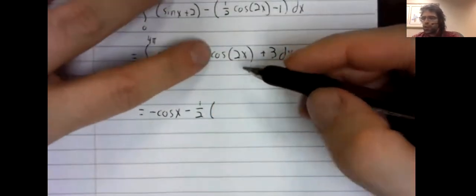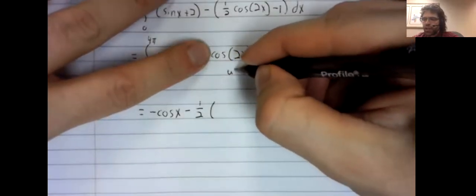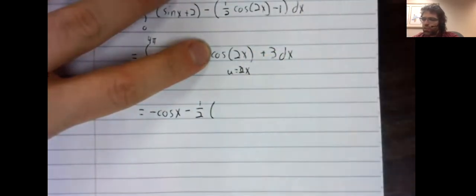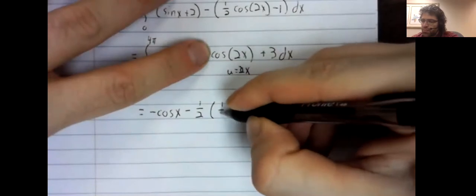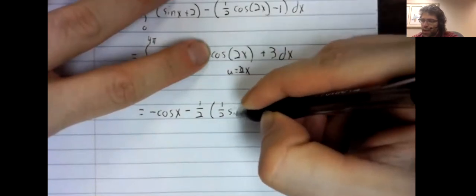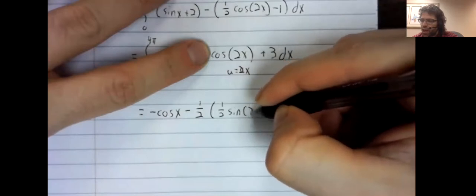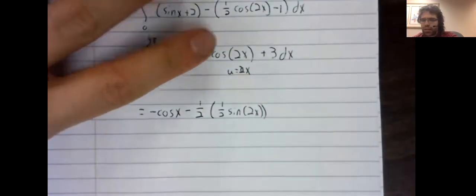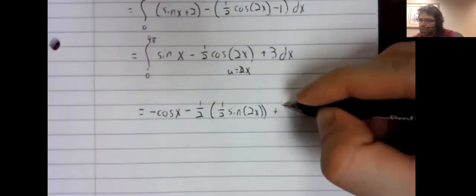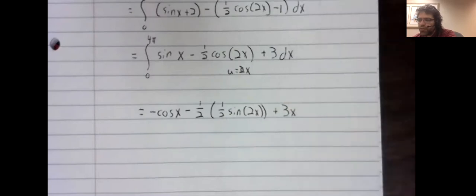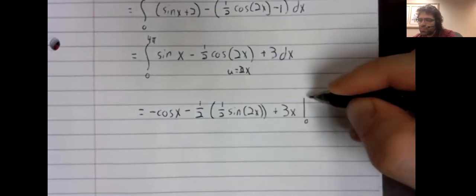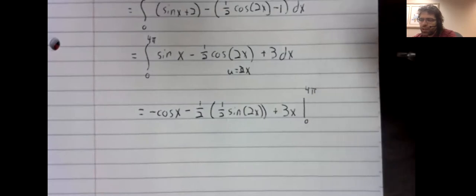If you're struggling with this anti-derivative, you can use u substitution. It ends up being one half the sine of two x. The anti-derivative of three is three x.